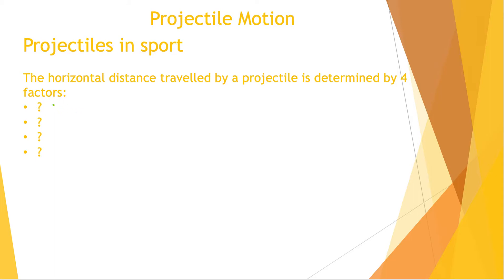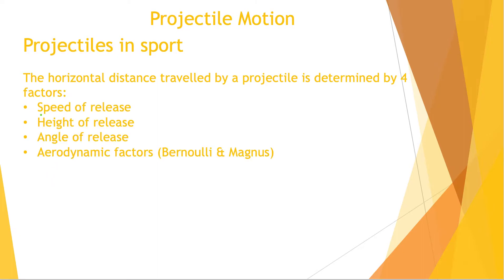If we are looking for a projectile to travel as far horizontally as possible, there are four factors we can manipulate as athletes: the speed of release, the height of release, the angle of release, and aerodynamic factors. In this video we'll focus on speed of release, height of release, and angle of release. Aerodynamic factors will be covered in a future video.